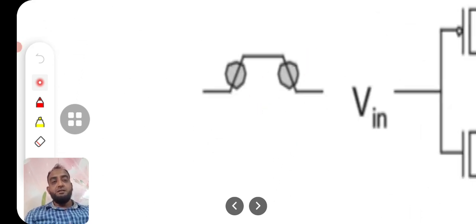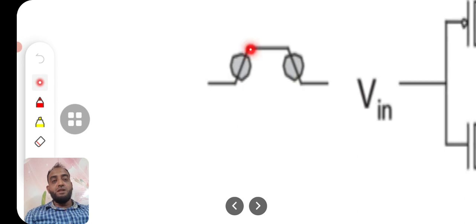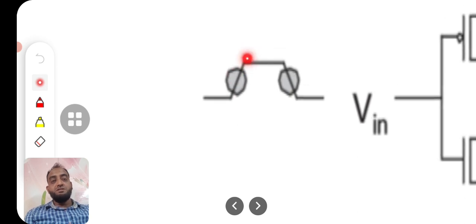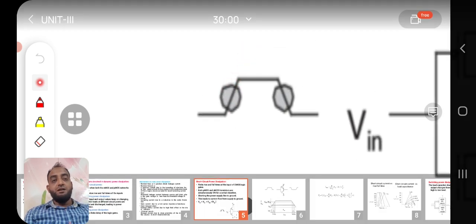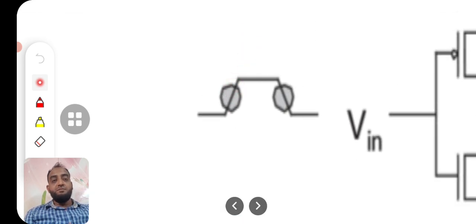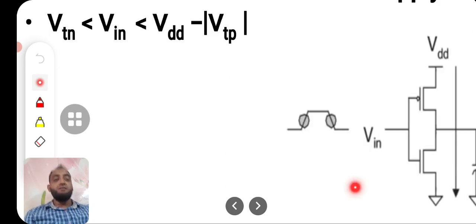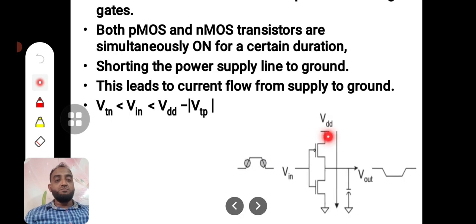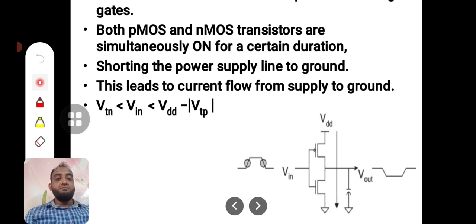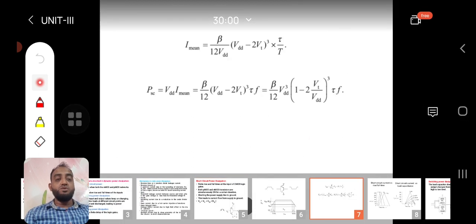If we zoom in, it will look like this. During this finite time — at the midpoint of the rise time and during the fall time — what happens is that both devices, the PMOS transistor and the NMOS transistor, will be directly in saturation.